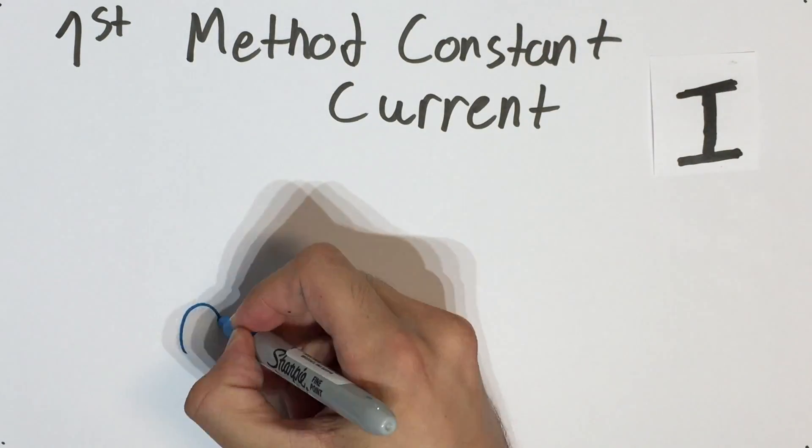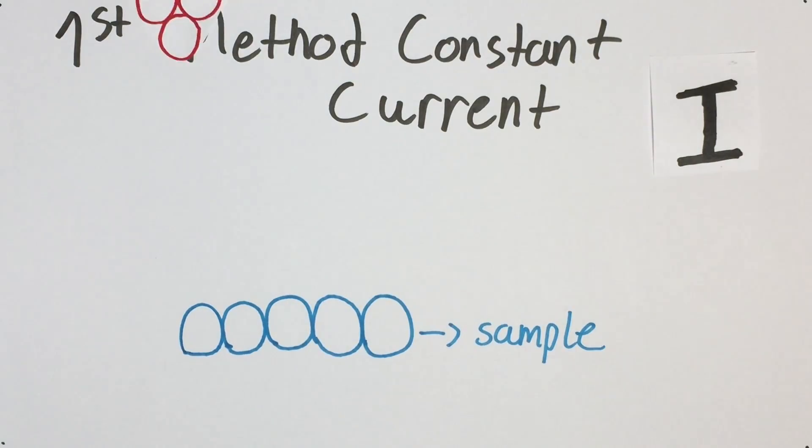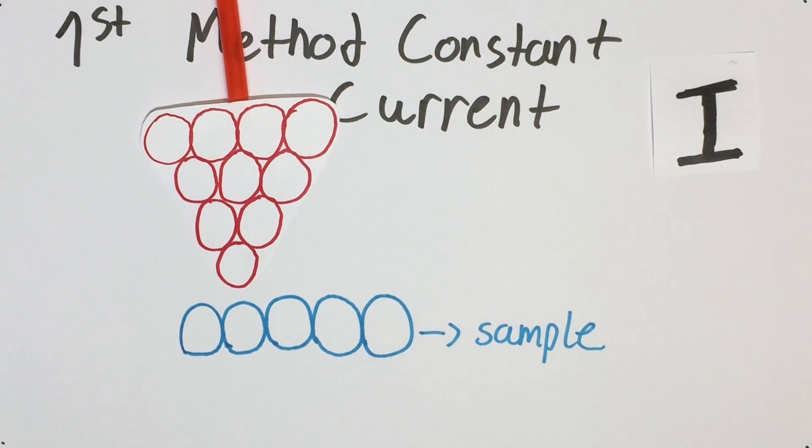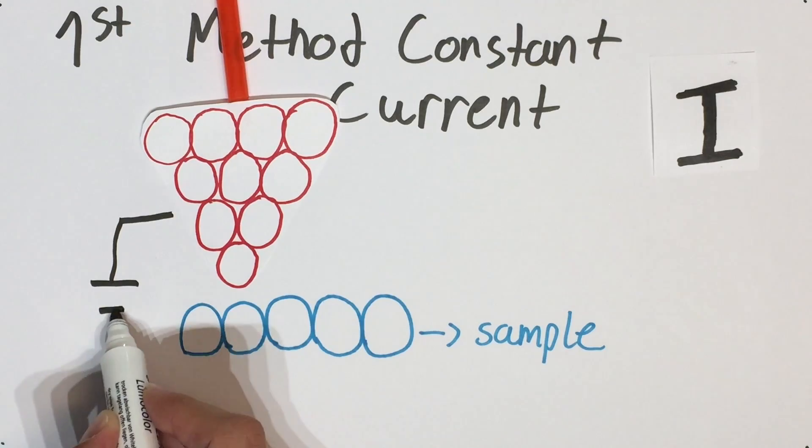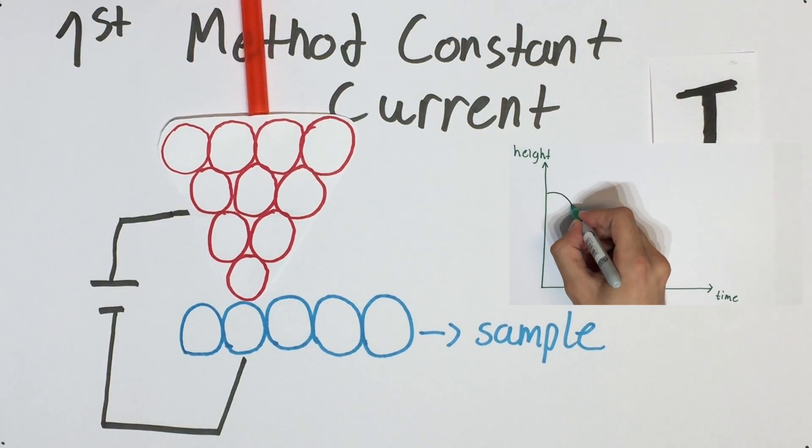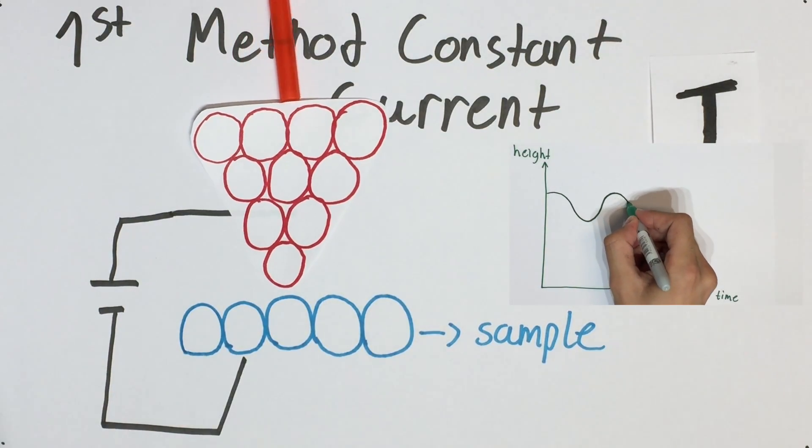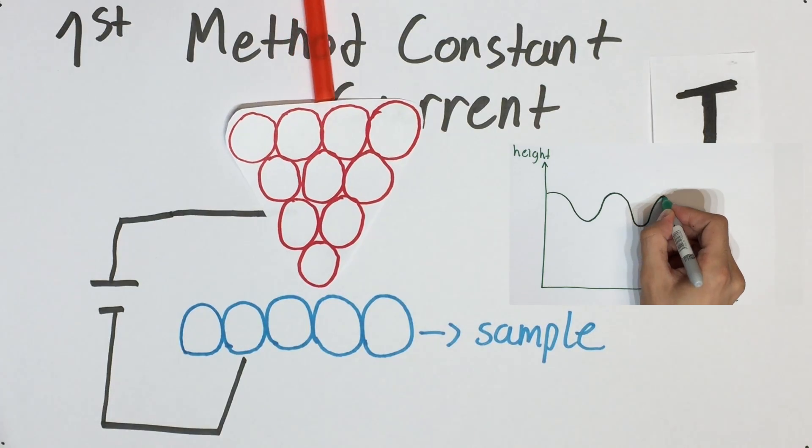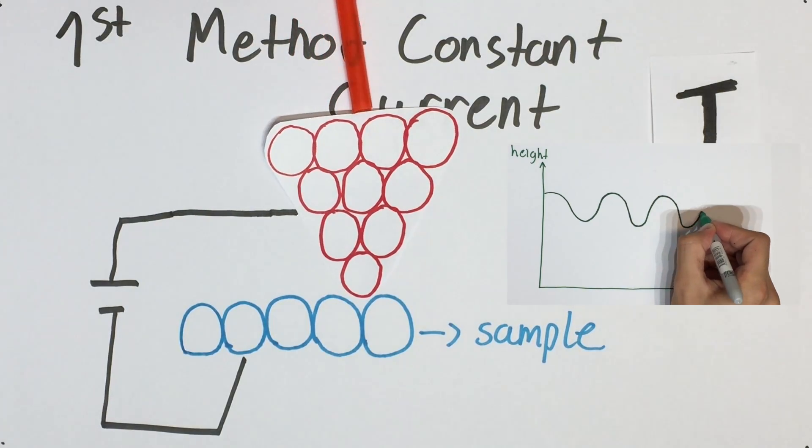The first method works by moving the tip of the probe on top of the sample in order to keep the current constant, the tip has to move up and down. The data processing unit records the movement of the tip and is then able to construct into an image the surface of the sample.